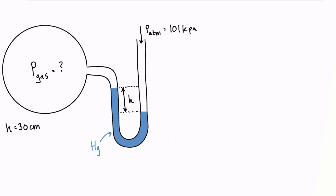So how do we approach this problem? We want to figure out what the pressure of the gas is. The expression we're going to need is P_gas equals P_atmosphere plus or minus rho times g times h. We just need to determine whether we're adding or subtracting this term from atmospheric pressure, which is a known value.